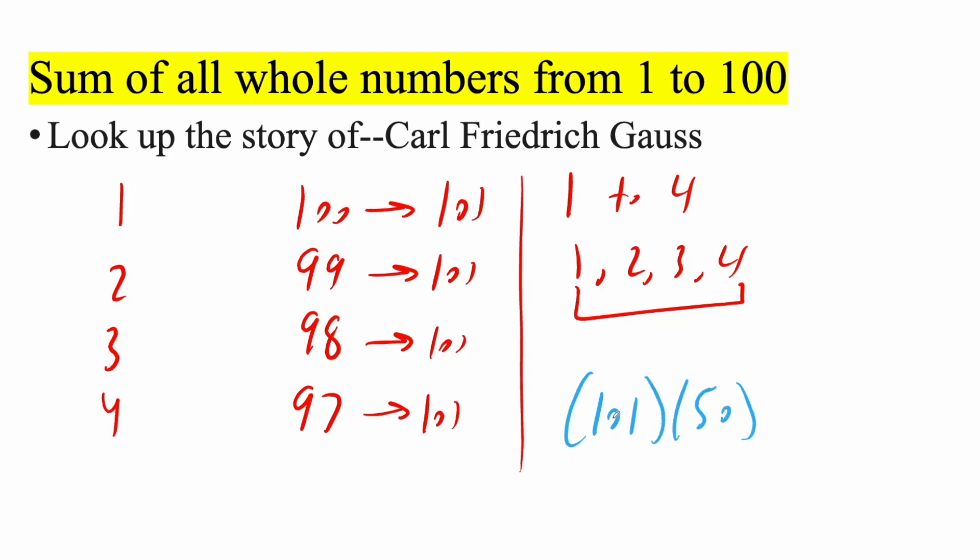Now we can do some quick mental math. Instead of saying 101, we can say we have 100 plus 1 times 50. 100 times 50 would give us 5,000. 1 times 50 is 50. So we get 5,050. And so this right here is our final answer. And so if you add all the whole numbers from 1 to 100, you would get 5,050.